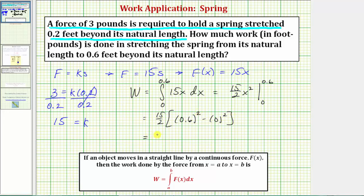So we have 15 halves times, this simplifies to 0.6 squared, which equals 0.36. 15 halves times 0.36 equals 2.7. And this is work, and the units are foot-pounds.